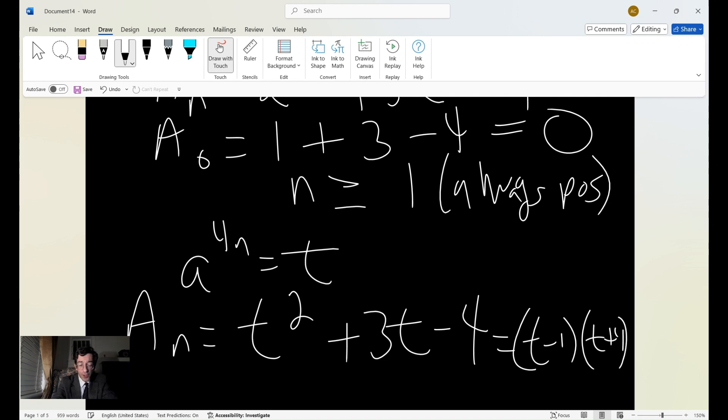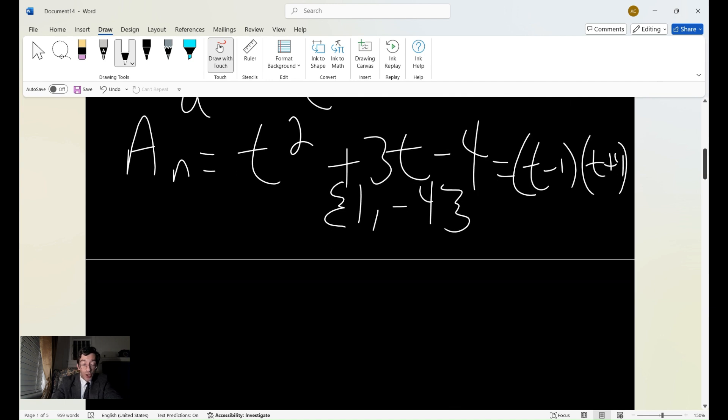So the roots, the quadratic roots here, are 1 and negative 4. And so now we could do what Euler would be pleased with, which is to show the multiplication.